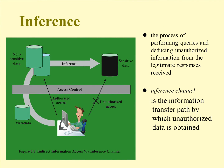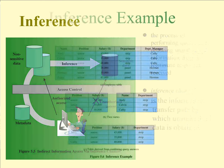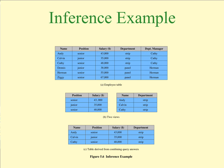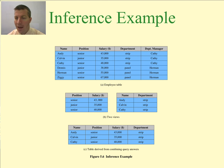Inference is where we start dealing with smarter users. Even if you have things blocked off as well as you think, inference is the process of performing authorized queries and then deducing unauthorized information from the legitimate responses received. This problem arises when a combination of data items is more sensitive than the individual items. For example, consider an employee table that is blocked from a specific user. However, two views are provided: one shows salary by position, and another shows what department a person belongs to by name.